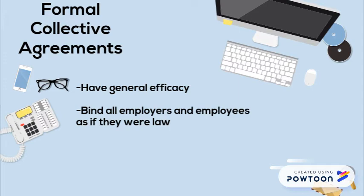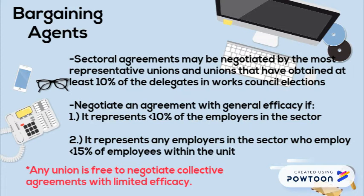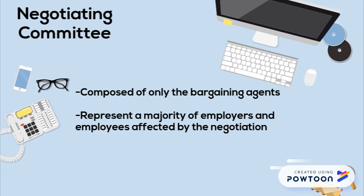There are different types of agreements. Sectoral agreements may be negotiated by the most representative unions. An agreement with general efficacy may be negotiated if it represents less than 10% of the employers, or it represents any employers in the sector who employ less than 15% of employees within the union. The negotiating committee must be composed of only the bargaining agents as defined by the law. None of these agents can be excluded against its will. In order for the committee to be representative, the law requires that it represent a majority of the employers and employees affected by the negotiation.